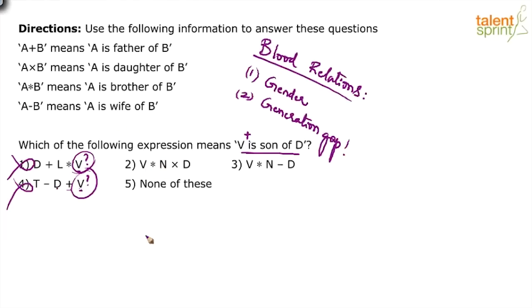V star N. Star means brother. V is the brother of N. N into - into means daughter. N is the daughter of D. You are getting it? So V is the brother of N, N is the daughter of D.